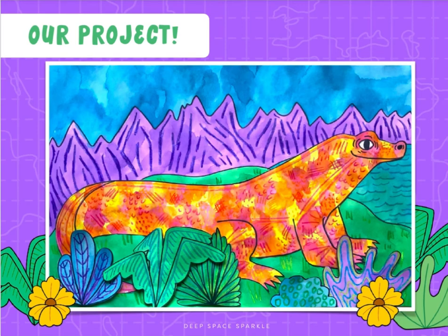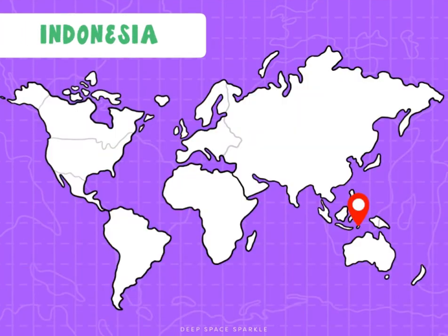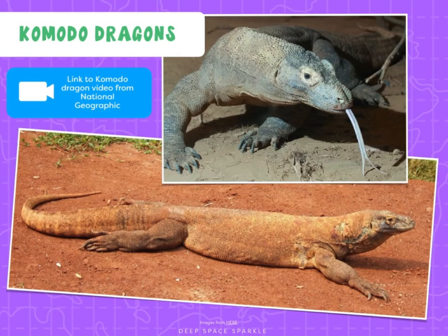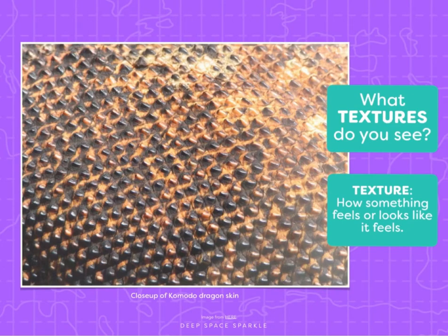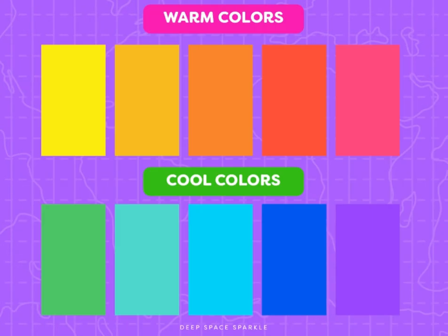Our project today — we're taking a trip to Indonesia to learn about Komodo dragons. This is the skin of a Komodo dragon. What textures do you see? Remember, texture is how something feels or looks like it feels. Today we are going to be using a lot of warm and cool colors.